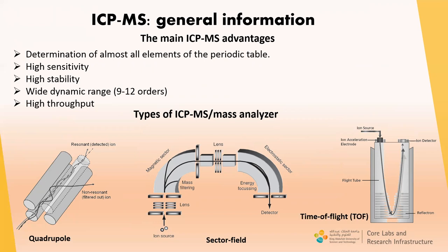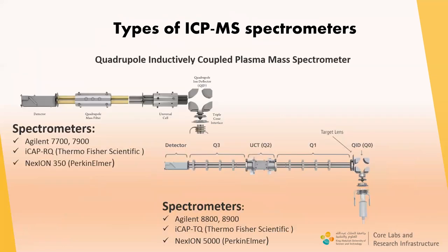There are three main types of ICP-MS instrument design based on different mass analyzers: quadrupole, sector field, and time-of-flight. There are two types of quadrupole ICP-MS spectrometers: single quadrupole and triple quadrupole. In the first type, the mass analyzer includes a collision reaction cell and one quadrupole mass filter. In the second type, the design includes two quadrupole mass filters with the collision reaction cell between them. The quadrupole mass filter allows analysis of ions according to their mass-to-charge ratio, scanning ions in mass sequence from low mass to high mass. The standard configuration of all modern quadrupole ICP-MS spectrometers includes the collision reaction cell.